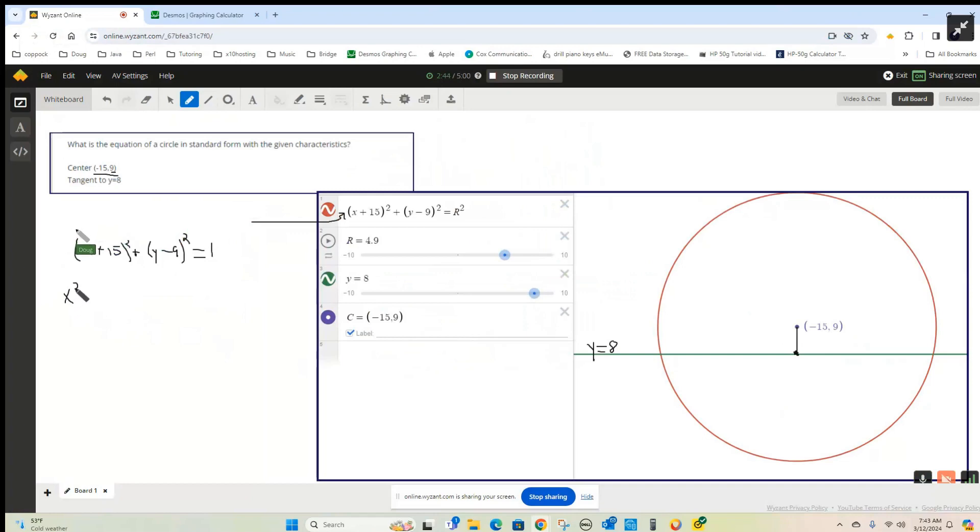So that's what your textbook's doing. This is x squared plus 30x plus 225, plus squaring the second binomial, y squared minus 18y plus 81 equals 1. And then we can combine the constant terms.